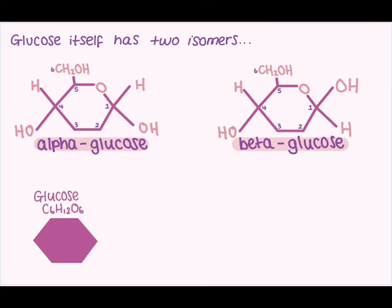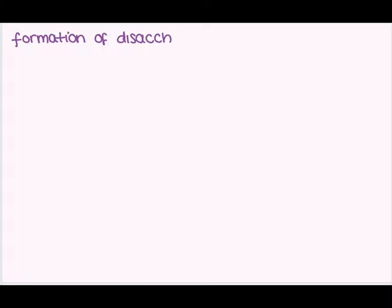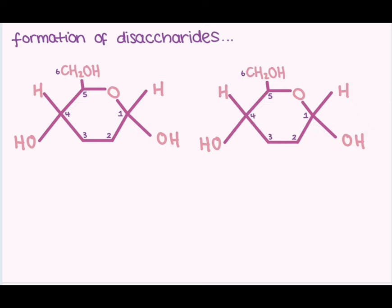Because we only need to know the structure of glucose off by heart, I am going to do the disaccharide worked example using the glucose structure, but for galactose and fructose I'm just going to use the hexagonal representation. When we join just two monosaccharides together we produce a disaccharide — di means two in Greek, so the word literally translates to two sugars. When we build polymers from monomers it occurs by condensation reaction, meaning per new bond formed we have the release of a single water molecule.